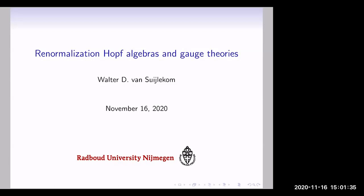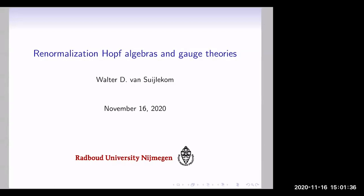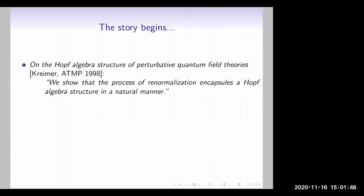In 1998 there was a paper coming out where the abstract already indicates much of the contents: Derek claimed to show that the process of regularization in capsules of Feynman graph structure in a natural manner. That was actually spot on — a very nice structure that appeared.